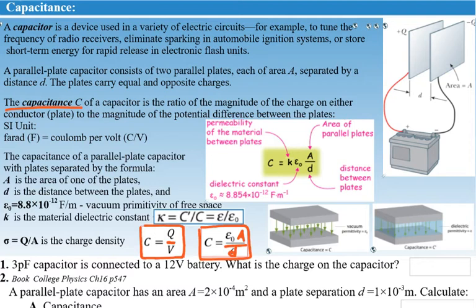When you think about voltage, think about a lake. A flat lake has no current — to create current, you raise one side, giving it higher potential, and the water flows from higher to lower potential. Similarly, when you apply a potential difference (voltage), charges accumulate on the plates: the plate connected to the negative terminal gets excess negative charge, and the plate connected to the positive terminal gets excess positive charge.